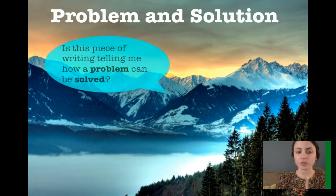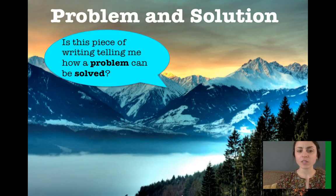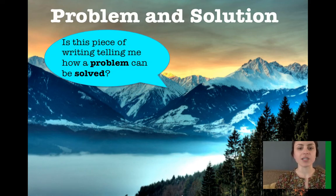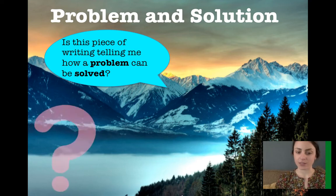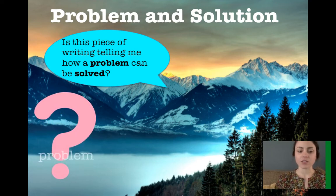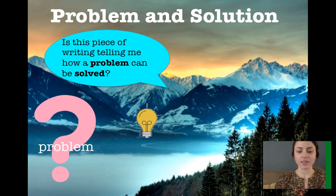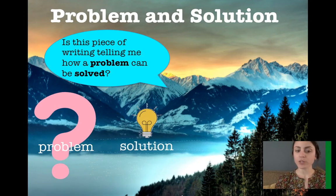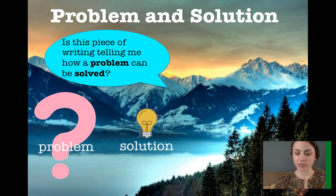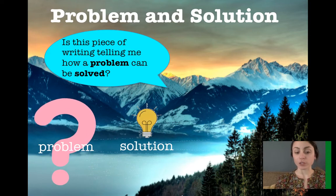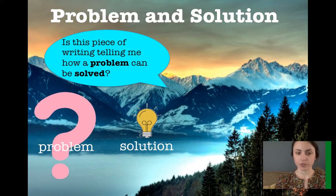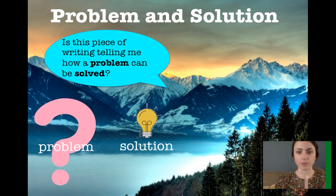Problem and solution. Is this piece of writing telling me how a problem can be solved? It can also be referred to as question and answer — that's the use of the question mark and the light bulb for the solution. Problems are usually presented at the beginning of articles or texts, where the solution or solutions are provided throughout the text.